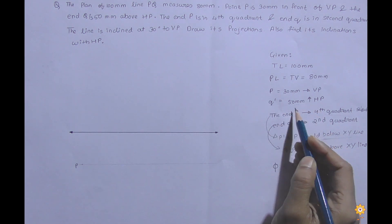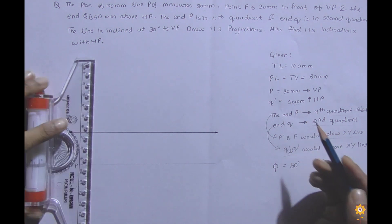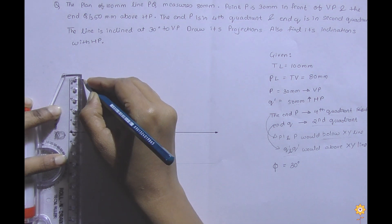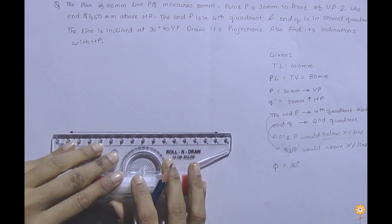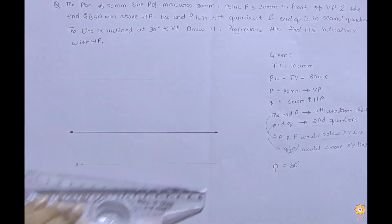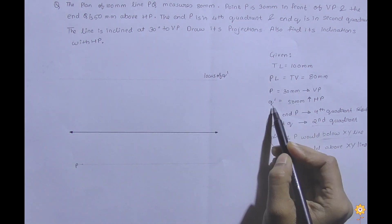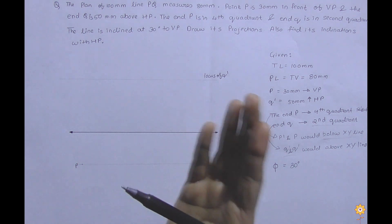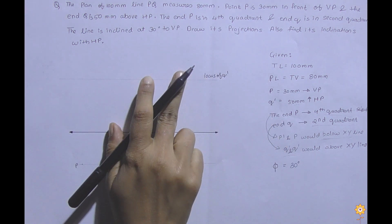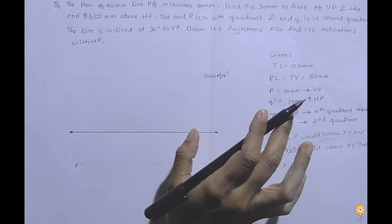Next is Q'. Q' and Q would both be above the XY line as they are in the second quadrant, so it is 50 mm above XY. From the XY line I'll take 50 mm, and that would be my Q', and I'll mark the locus of Q'. For Q we will have two points — one for true length and one for front view or top view — so for Q' also we'll have two points: one for the front view and one for the true length. I'll name it as locus because we don't know the exact point for both.